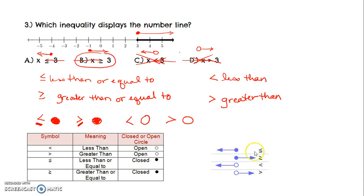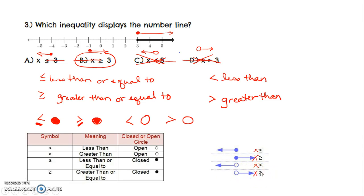Another visual: less than or equal to, as long as your variable is written first, goes to the left with a closed circle. Greater than or equal to, as long as your variable is written first, closed circle to the right. Less than, if your variable is first, open circle to the left. Greater than, if your variable is first, open circle going to the right. Hopefully that helps with less than or equal to and greater than or equal to on a number line.